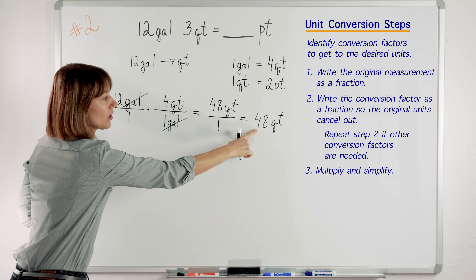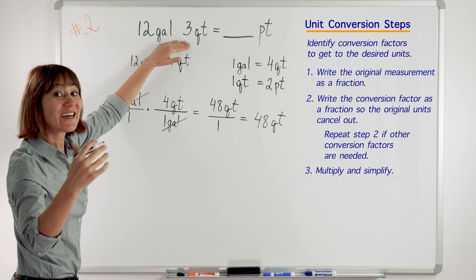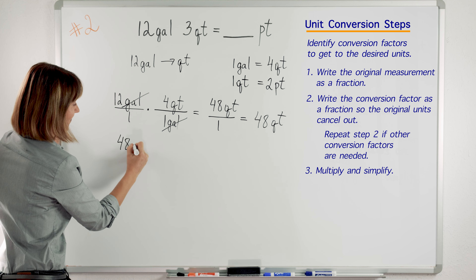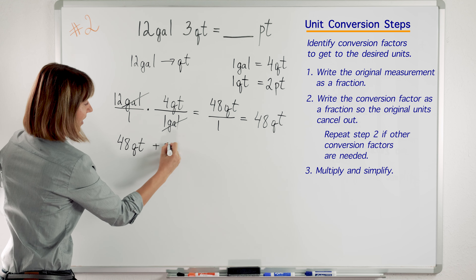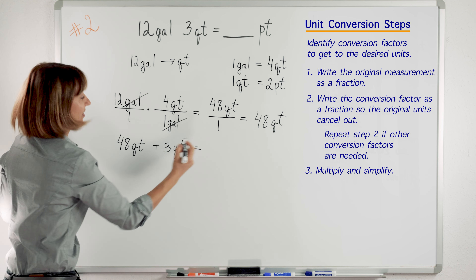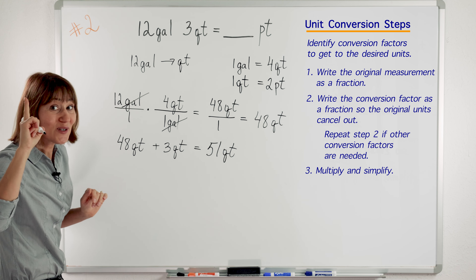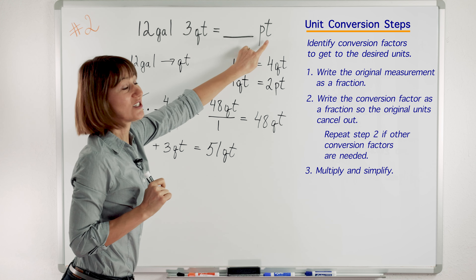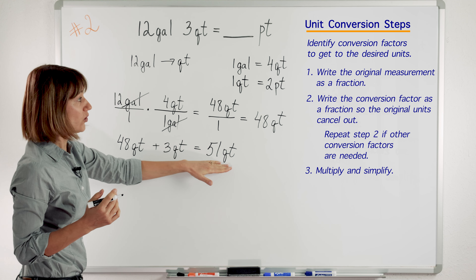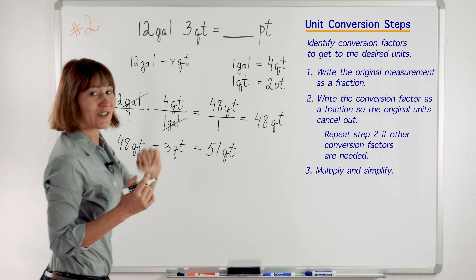Now let's add our second quantity: 3 quarts. 48 quarts plus 3 quarts — the total is 51 quarts. But we need to remember what we are trying to do: we are trying to get to pints. So we are going to take our 51 quarts, use this conversion factor, use these steps, and get to pints.